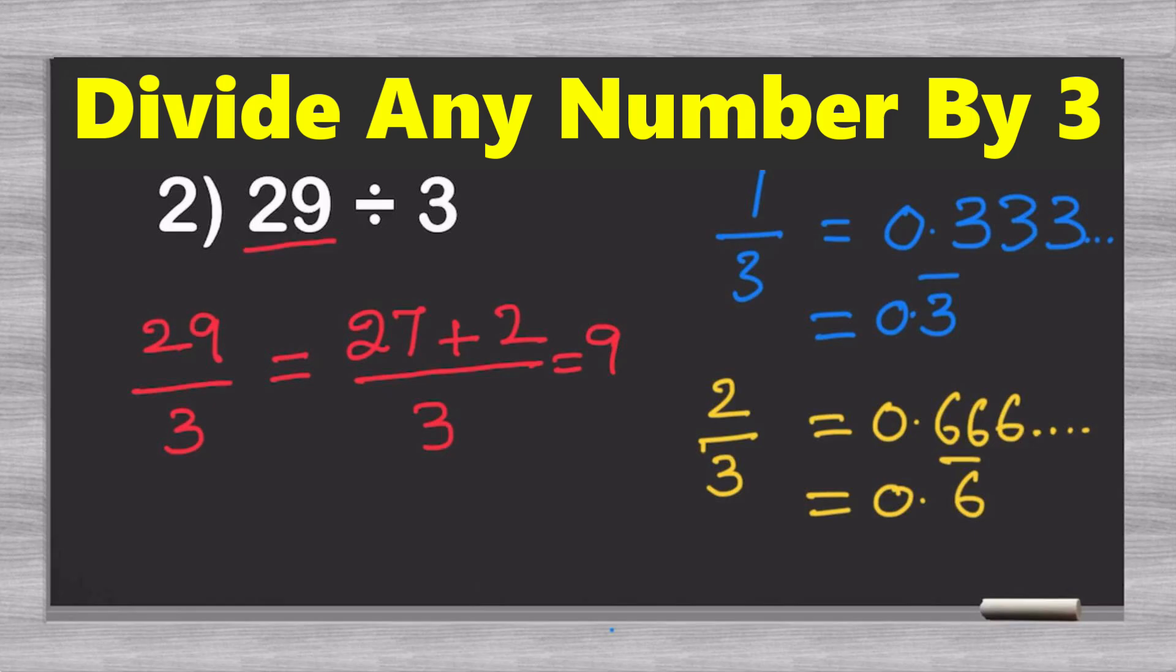Then, to fill in the rest, we have 2/3, which is 0.6 repeating. So, once we add that into our total, we have our final result. 29 divided by 3 is 9.6 repeating.